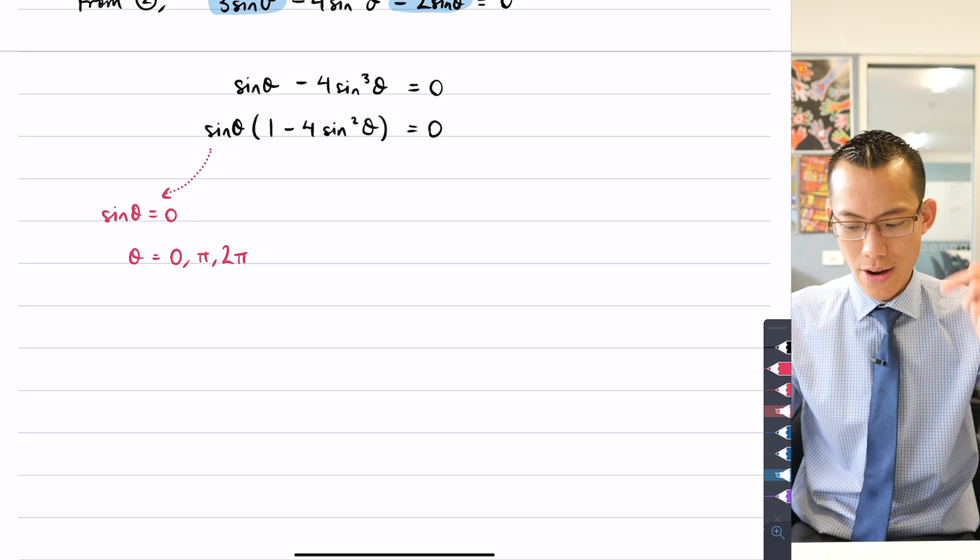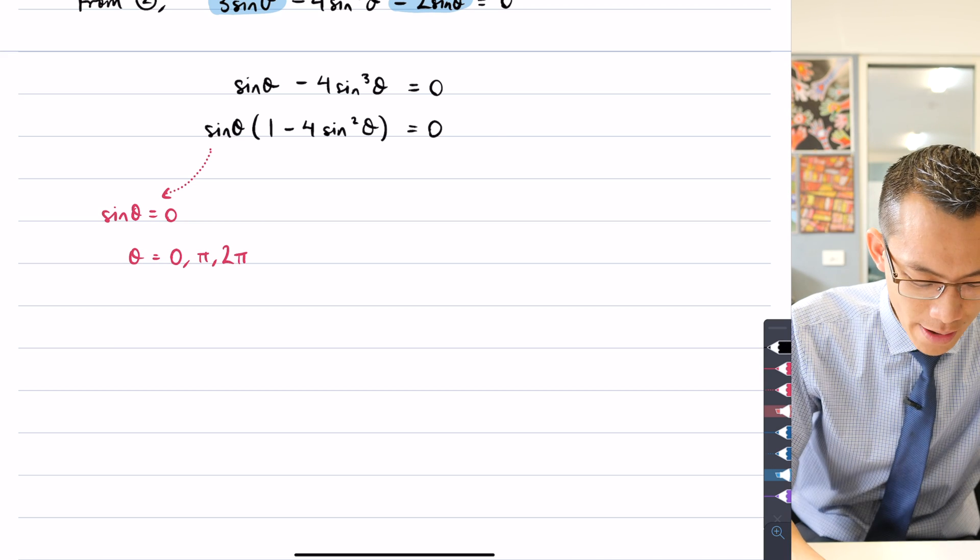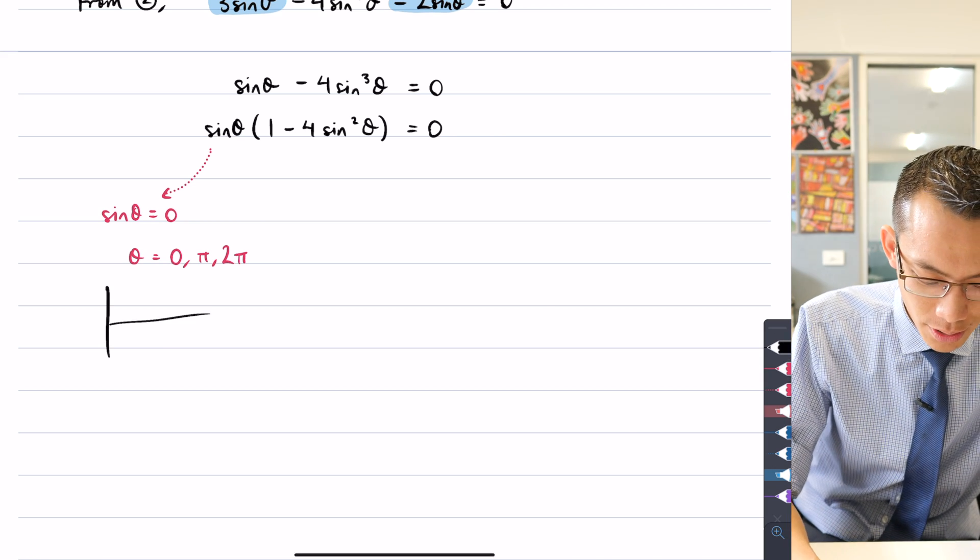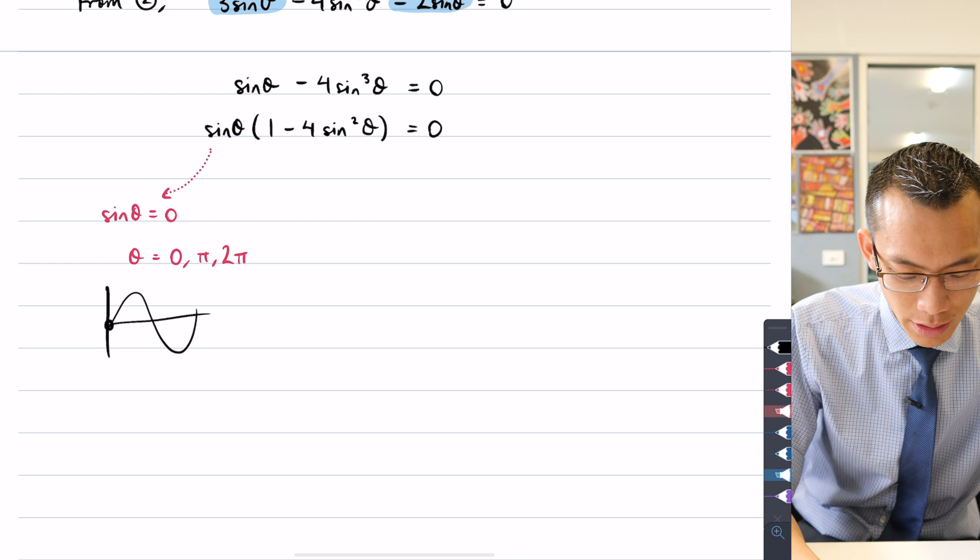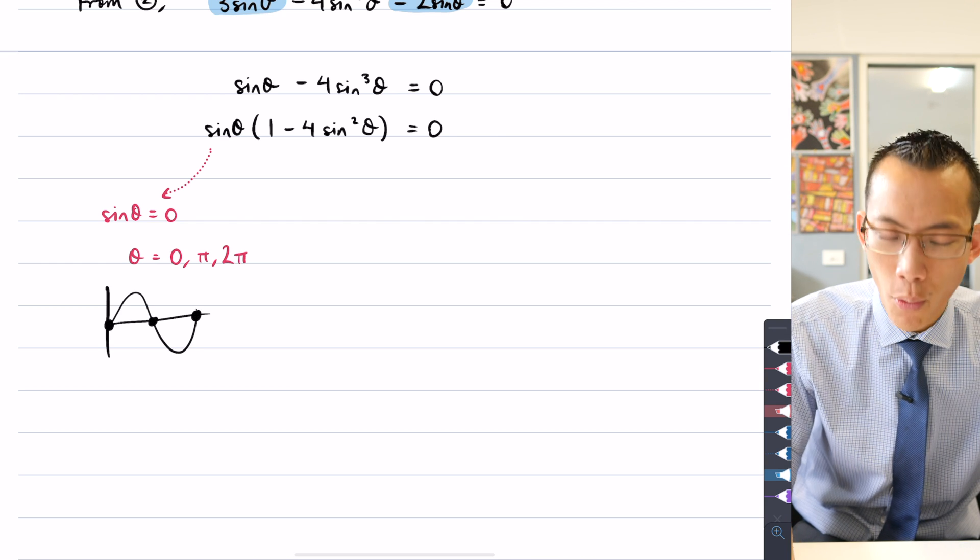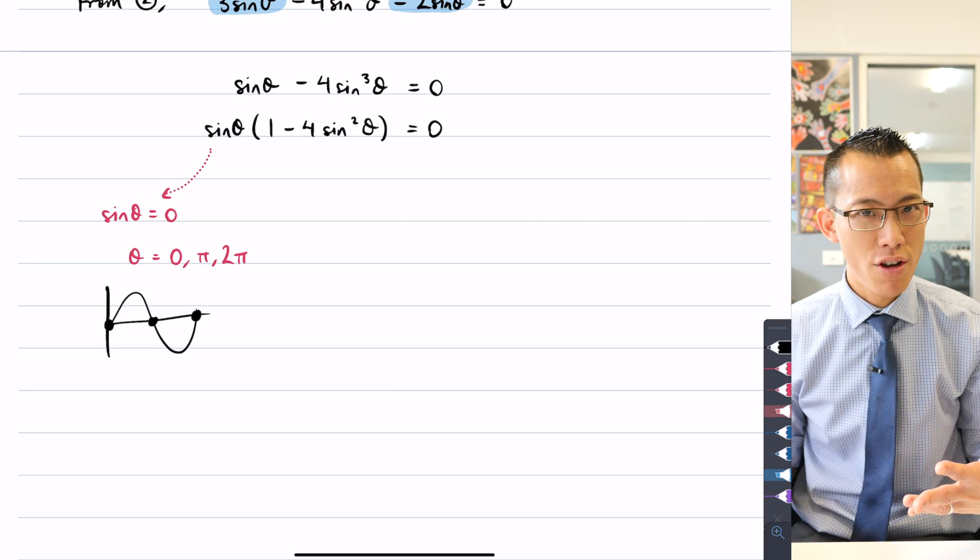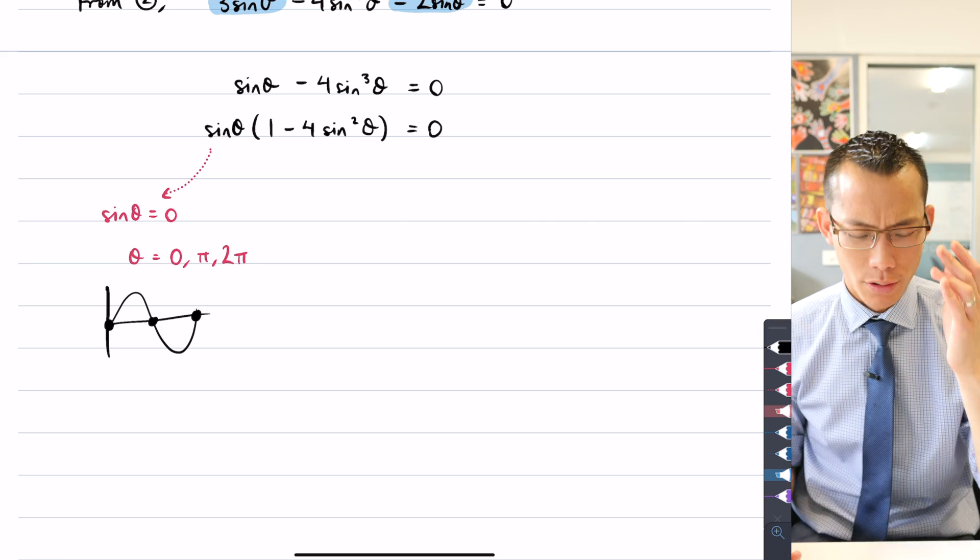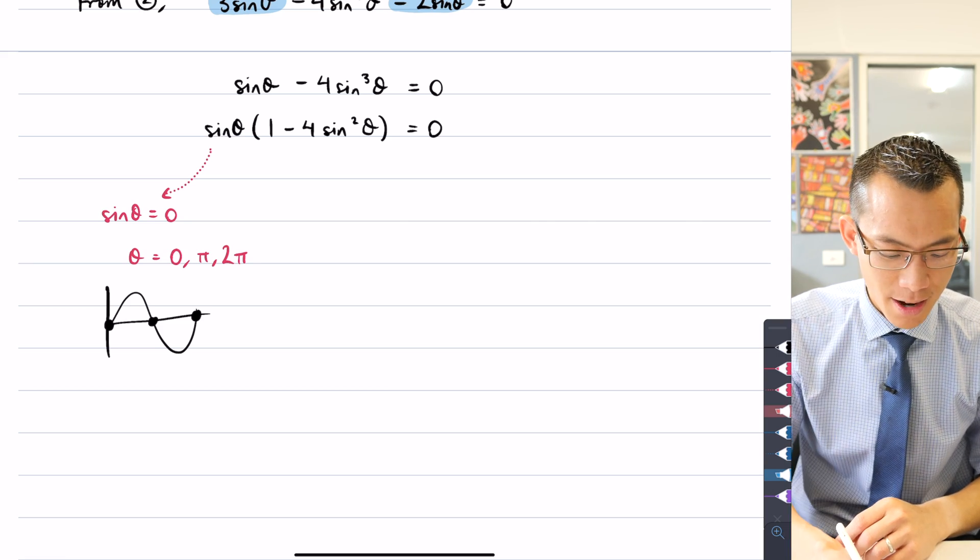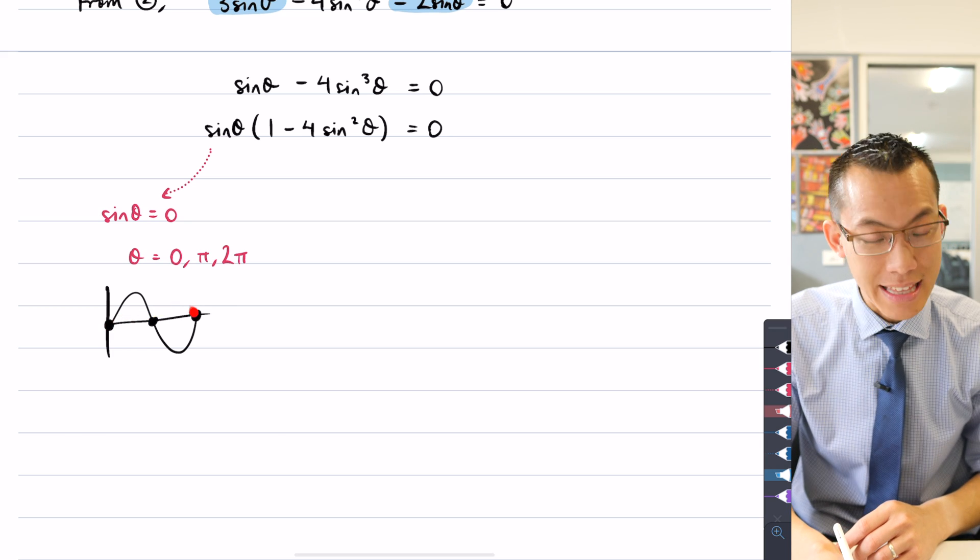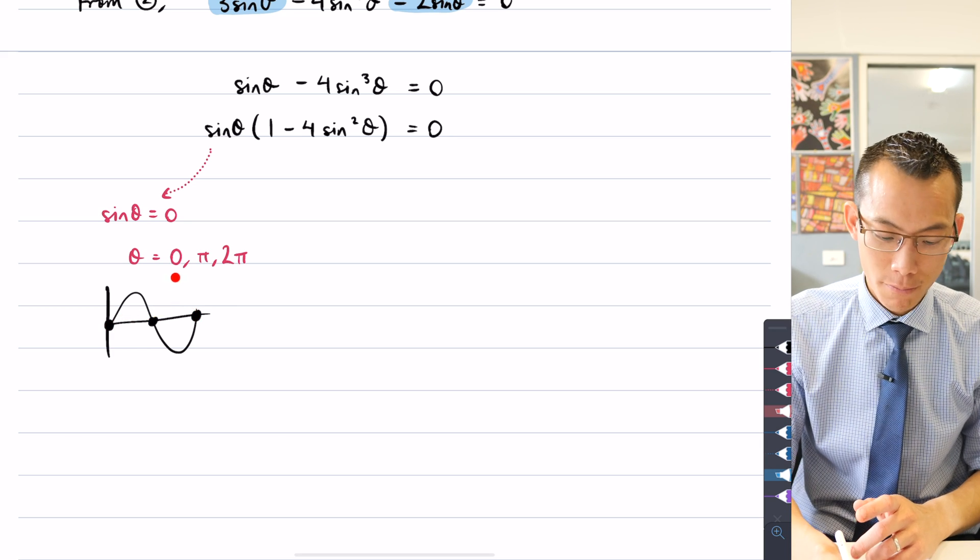And if you're wondering how I got that so fast, I have a very basic sinθ curve in my head and I'm looking for these solutions here. That was the whole point of having it all equal to 0. You're just finding the x or the theta intercepts in this case. And they come in at the start, in the middle, and at the end of the standard domain. So 0, π, and 2π.